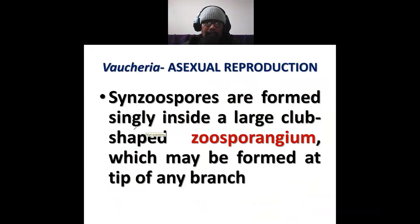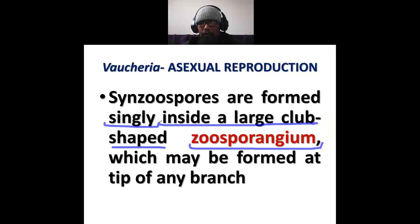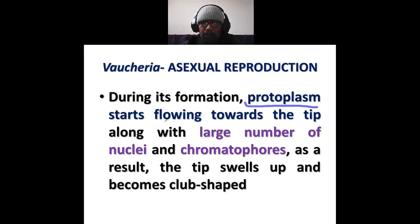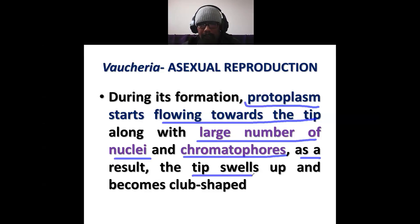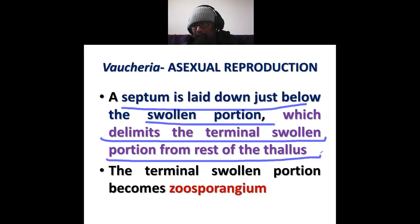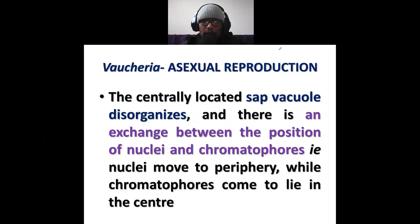Zoospores are formed inside a large club-shaped structure called zoosporangium, and they are formed singly inside a zoosporangium. Zoosporangium may be formed at the tip of any branch. During its formation, protoplasm starts rushing toward the tip along with a large number of nuclei and chromatophores. As a result, the tip swells and becomes club-shaped. A septum is laid down just below the swollen portion, which delimits the terminal swollen portion from the rest of the thallus. That delimited terminal swollen club-shaped portion becomes the zoosporangium.